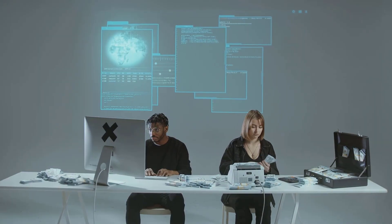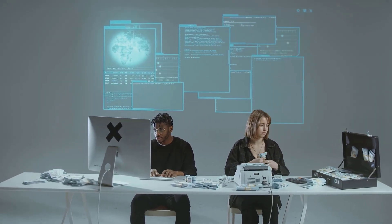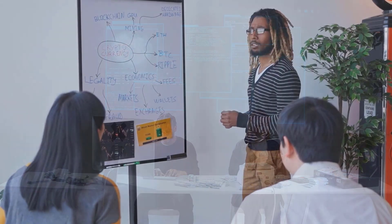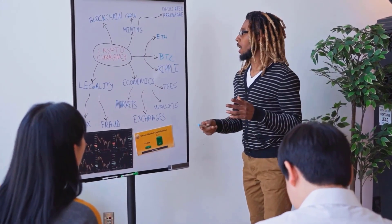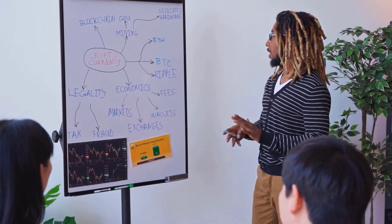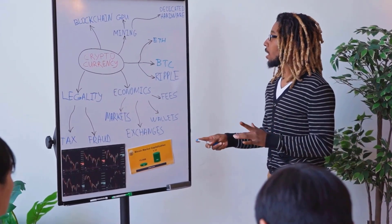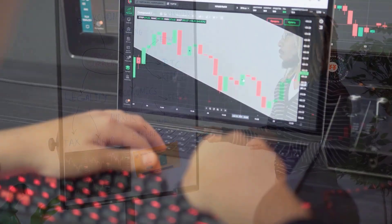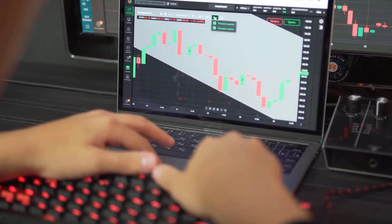Bullish structural cost forecasts range somewhere in the range of $0 to $0.20. Market examiners expect Tonic could reach $0.20. The bearish structural market cost expectation for 2023 is $0.